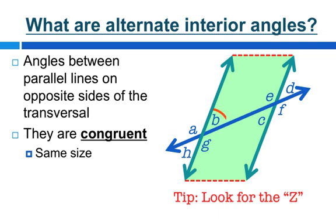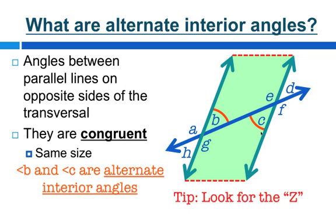So let's say we're talking about angle B. We're talking about opposite sides of the transversal on alternate sides of the parallel lines. The other parallel line is here, and the other side of the transversal is this side. So we're talking about angle C. That means angle B and angle C are alternate interior angles, and they are congruent. If we follow the tip to look for the zigzag, we can follow one of the parallel lines across the transversal and then down the other parallel line.